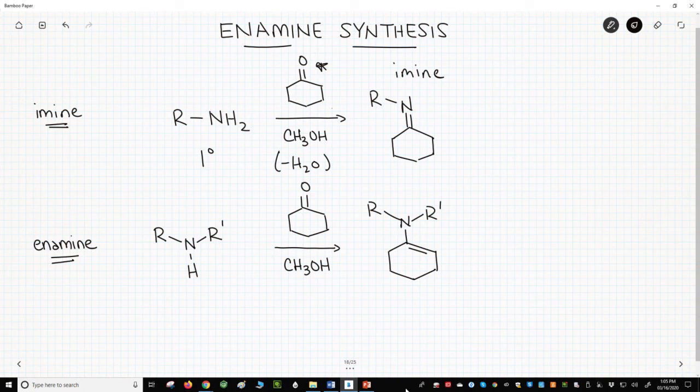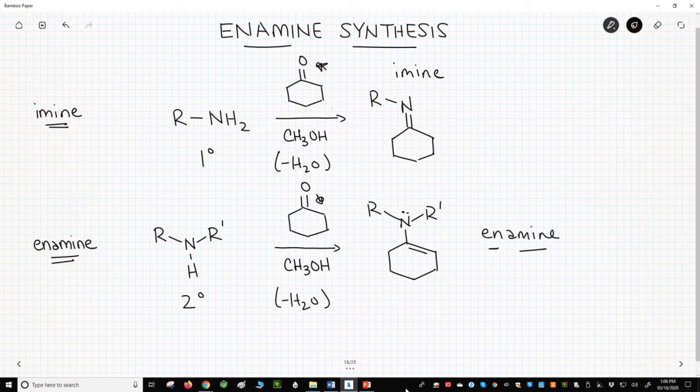On the bottom of the slide is an enamine synthesis, and this is new. A secondary amine reacts with a ketone to make a nitrogen next to a C-C double bond, and water is lost during the reaction. Enamines contain both an amine and an alkene, hence the name enamine.